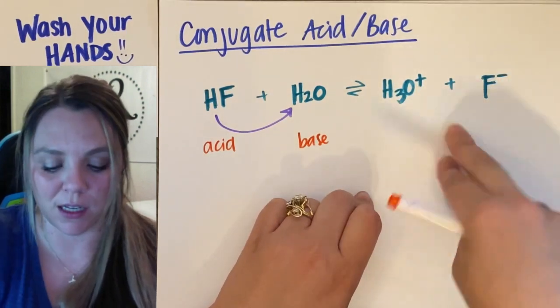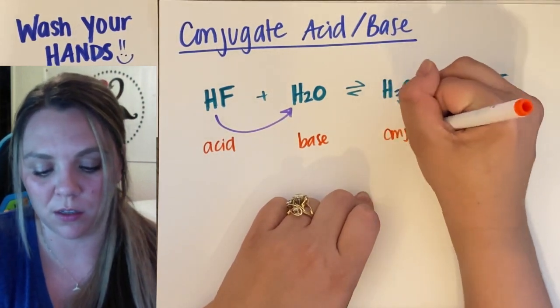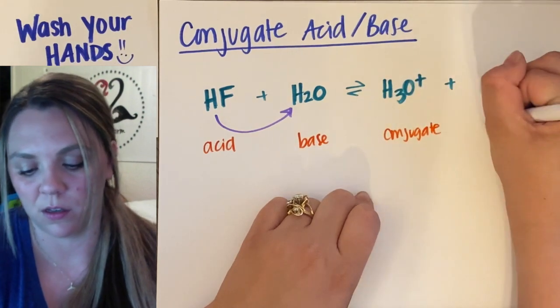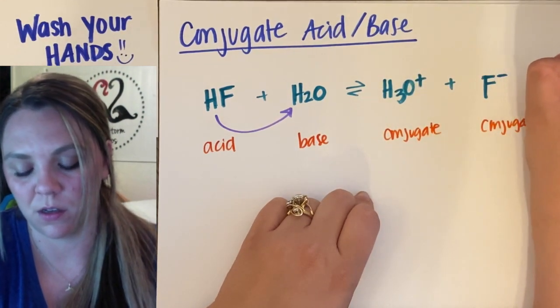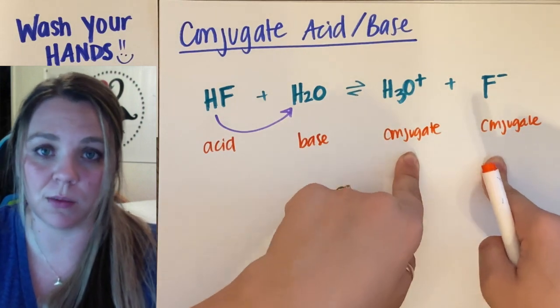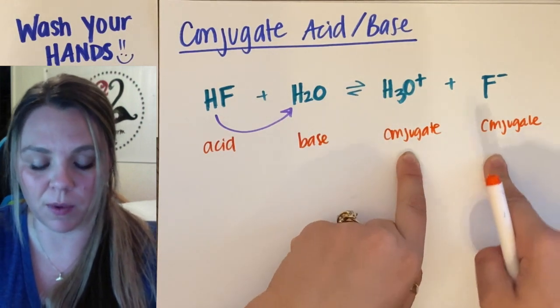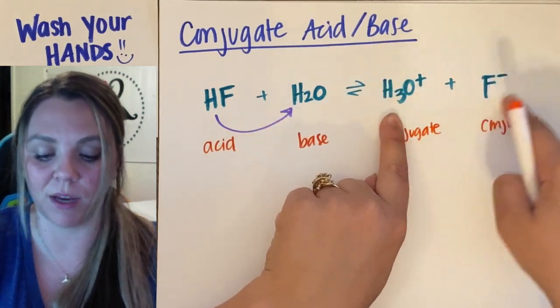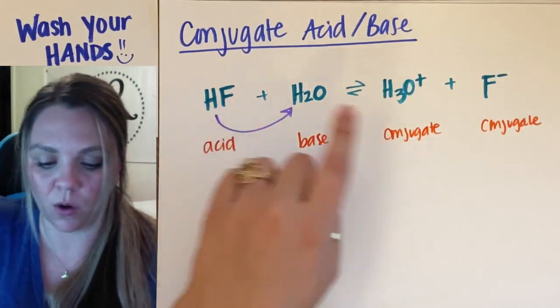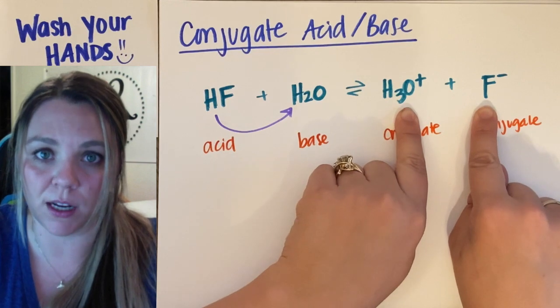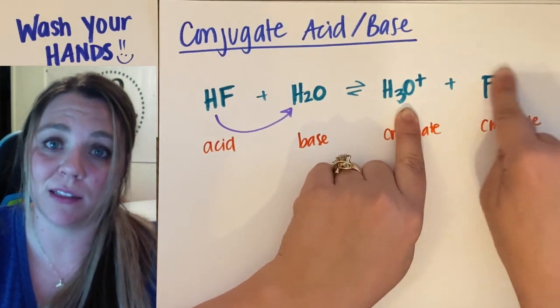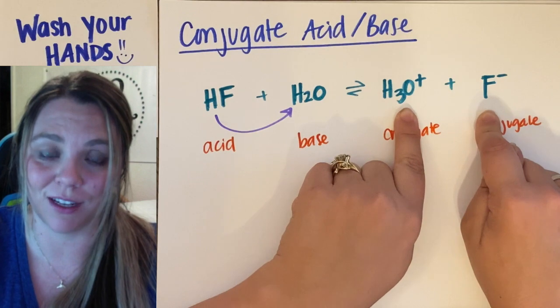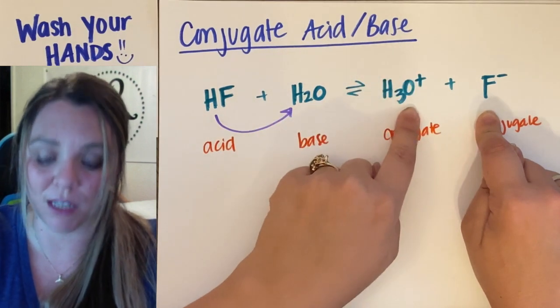So anything on my product side here, I'm going to label as conjugate. And then I just have to figure out which one of these is going to be the acid, which one's going to be the base. Think about moving backwards from H3O+ and F- to here. Which one of these guys is going to donate a hydrogen? Well, F- doesn't have a hydrogen to donate, and H3O+ does.